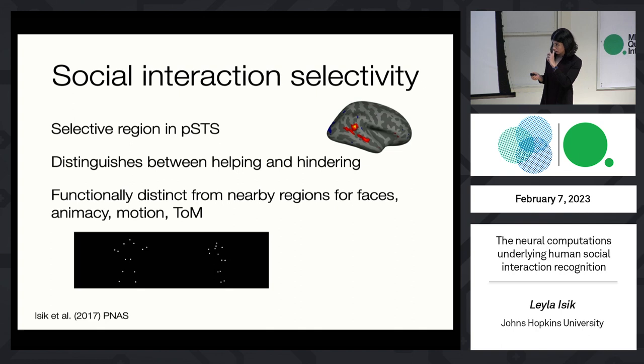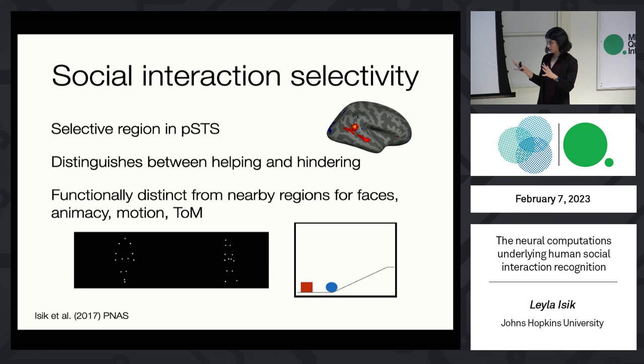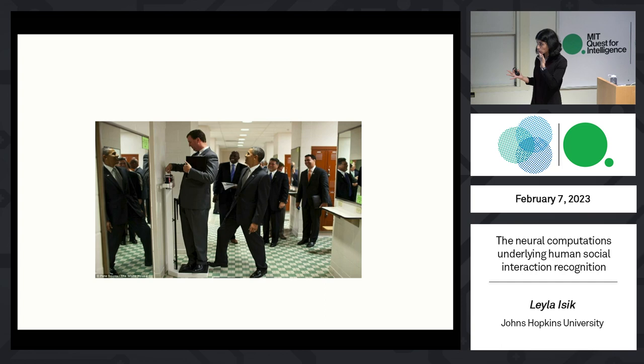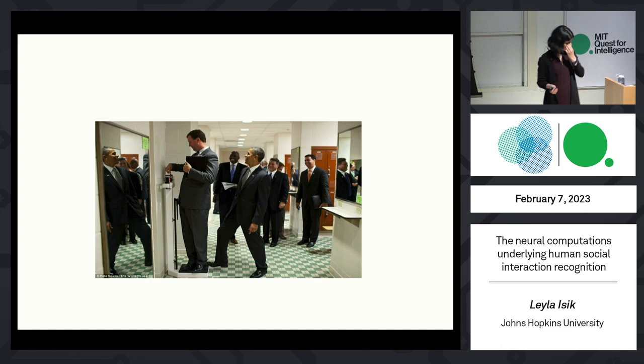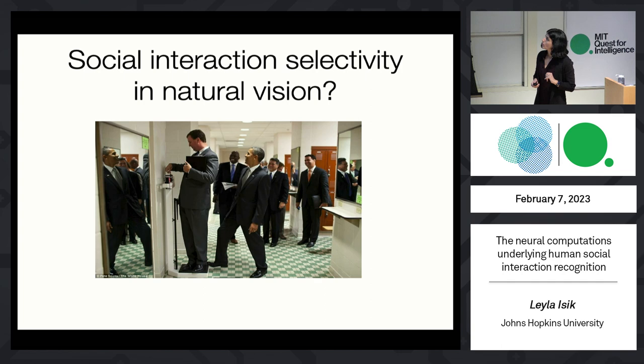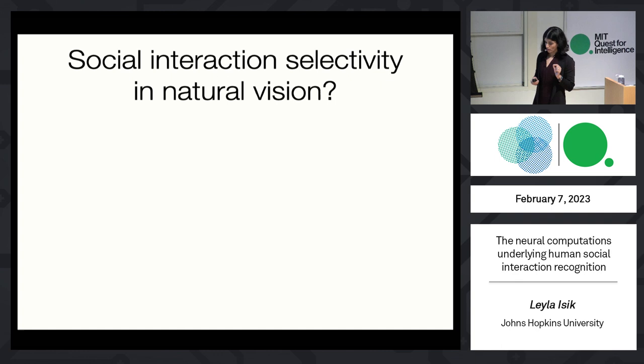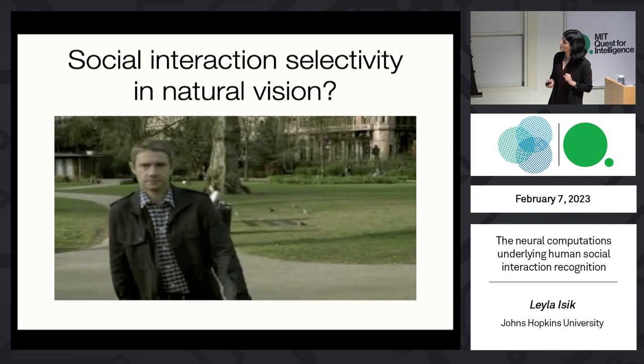So we found a region in the PSTS that seems to be selective for recognizing other people's social interactions, that distinguishes between helping and hindering interactions, and is functionally distinct from nearby regions for faces, animacy, motion, and theory of mind. While it was exciting that it generalized across two very different sets of simple stimuli, they're still both a far cry from the real world. The real world is even more complex — often you're not viewing static images but temporally extended events.